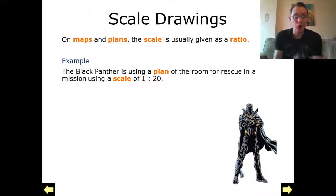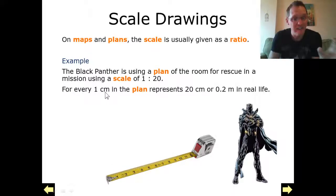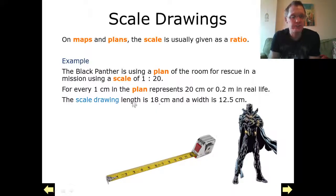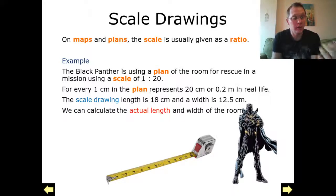We could also use them on map drawings. Here's a problem where the Black Panther is using a plan of a room for a rescue. On this plan, he's got a scale of 1 to 20. This means for every centimetre on the plan drawing, on the blueprints, it's going to actually be 20 centimetres in real life, or 0.2 metres. The scale drawing length is 18 centimetres in length, and a width of 12.5 centimetres. He needs to now use this to try and find the actual length of the room.